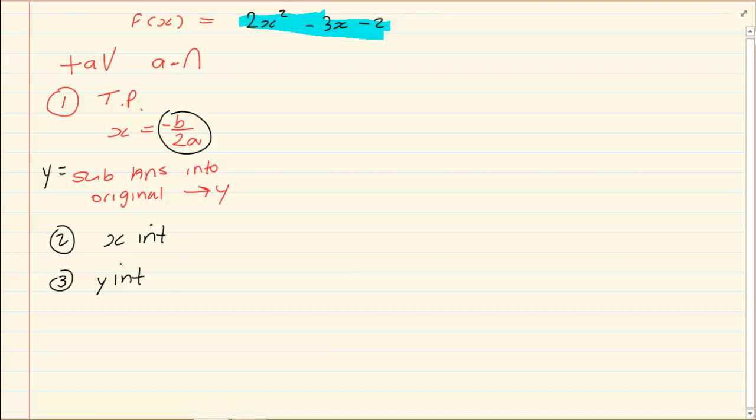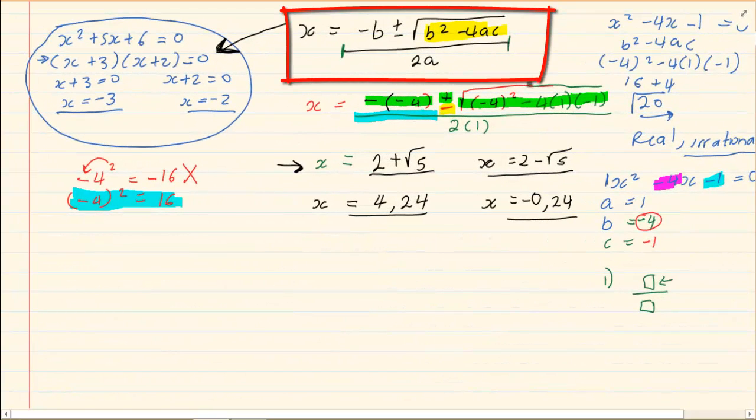Now, let us start with the turning points. The turning point is x equals minus b over 2a. In solving for x under the section quadratic equations, we had done where you would use the quadratic formula, which was minus b plus minus the root of b squared minus 4ac over 2a.